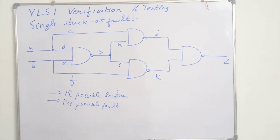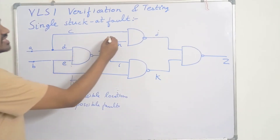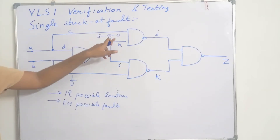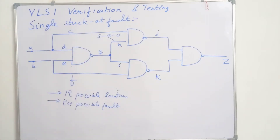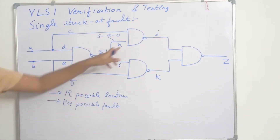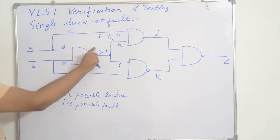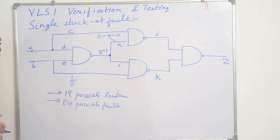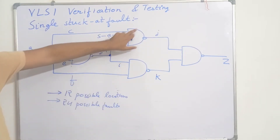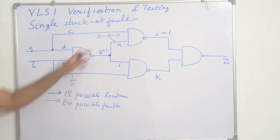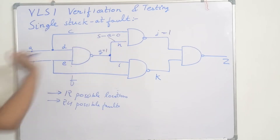Suppose the fault is that line H is stuck at 0 — written as S-A-0. So this H line is stuck at 0. Even if the value of G is equal to 1, this H value will be equal to 0. This is the stuck-at fault. So H will always be 0 regardless of what G is, and therefore the output of this NAND gate, J, will always be equal to 1 because H is stuck at 0.